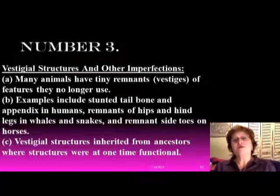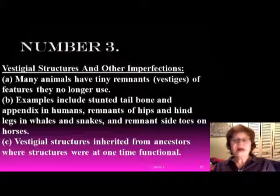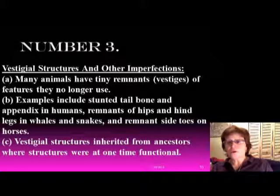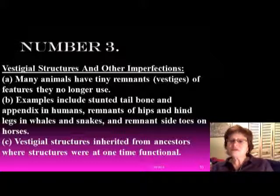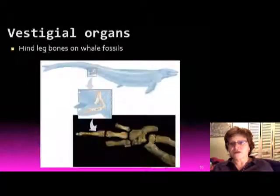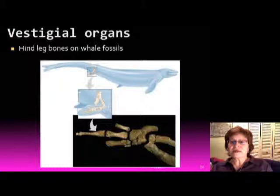Since we don't have a tail anymore, that just proves we had an ancestor which used to have a tail. We have similar vestigial structures in whales and snakes — they have the remnants of their hind legs. If you look at the horse or the dog, they have remnant side toes. These vestigial structures were inherited from ancestors that actually actively used them, so this is basically proof of evolution. This shows vestigial organ-like bones found in whale fossils.